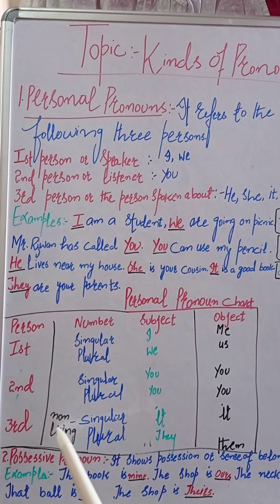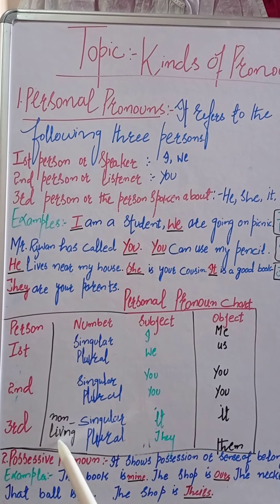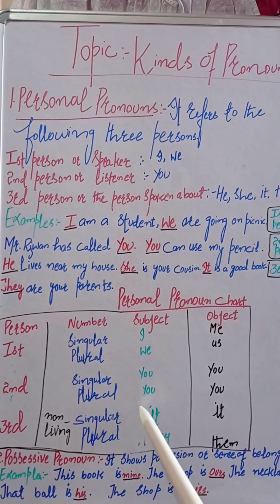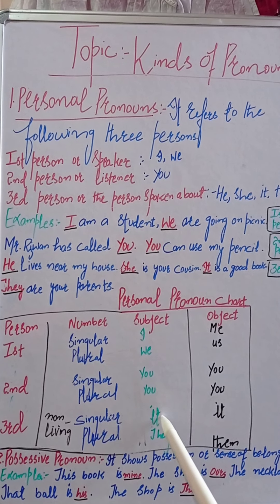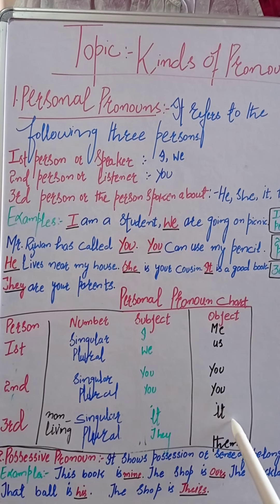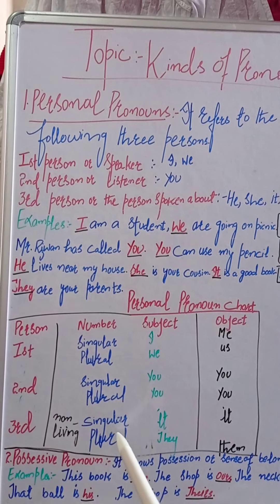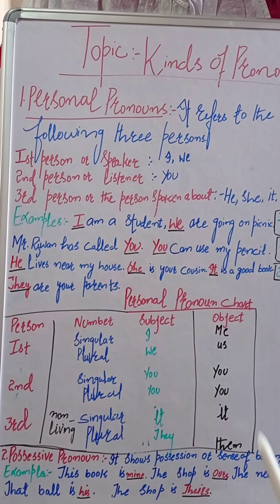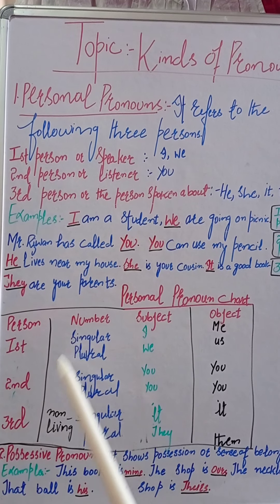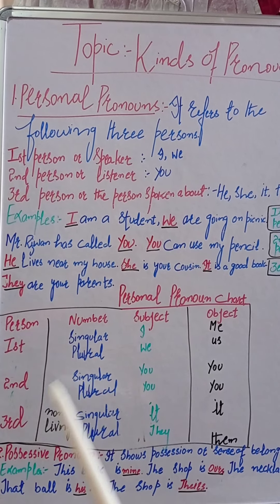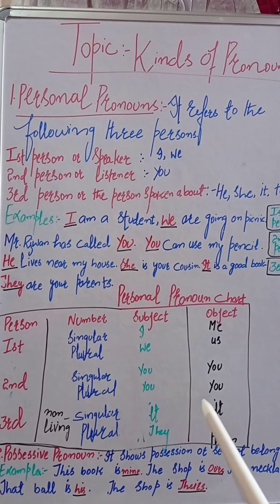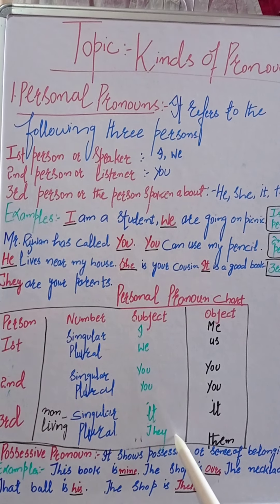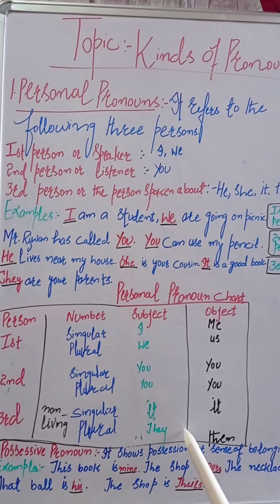Now come to third person singular. But when it is non-living — جب کوئی non-living ہو جیسے dog، book، tree — اس کے ساتھ it لگتا ہے، object میں بھی it لگتا ہے۔ Third person plural — they and them. First person یہاں پے آپ speaker ہیں، second person یہاں پے آپ listener ہیں، third person یہاں پے ہم کسی کے بارے میں بات کر رہے ہیں — whether it is non-living or living. سمجھ گئے آپ؟